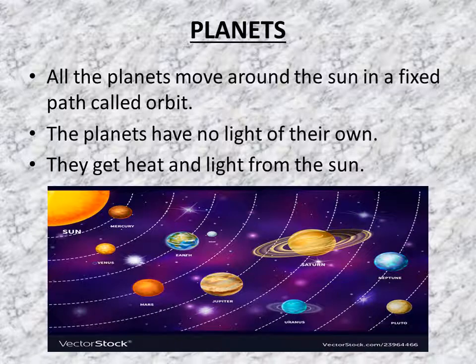Now let us learn about planets. All the planets move around the Sun in a fixed path called orbit. You can see here in the picture how all the planets are moving around the Sun, moving on one fixed path. The planets have no light of their own. They get heat and light from the Sun.